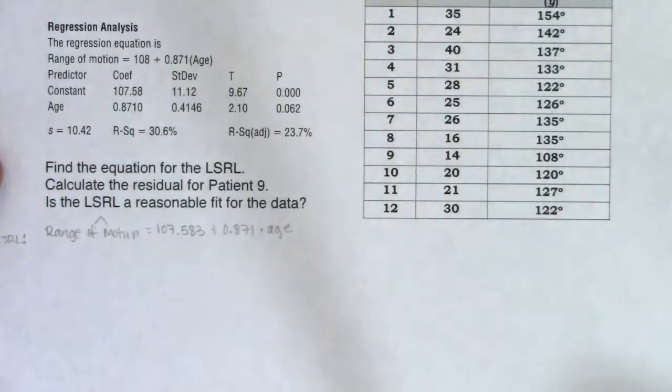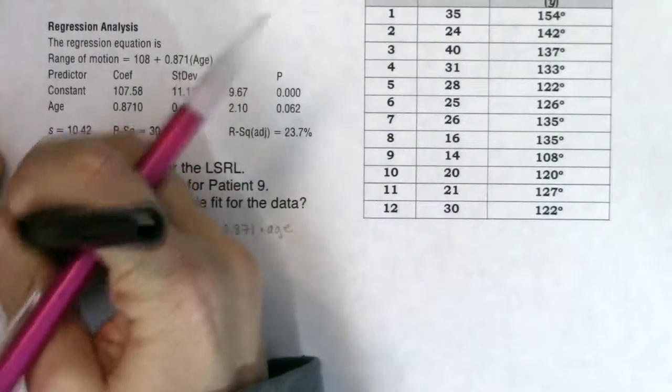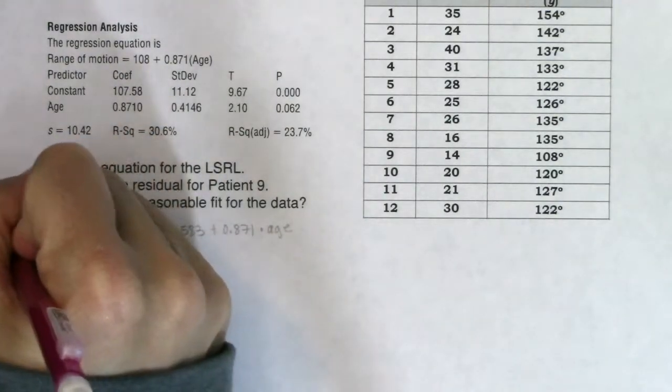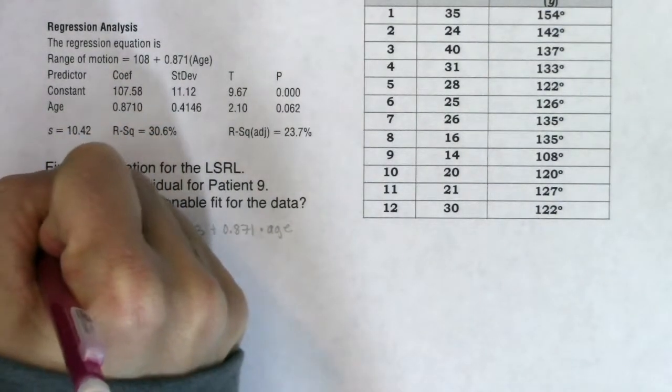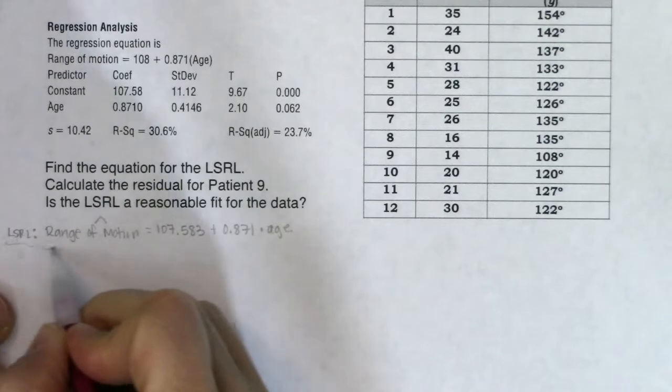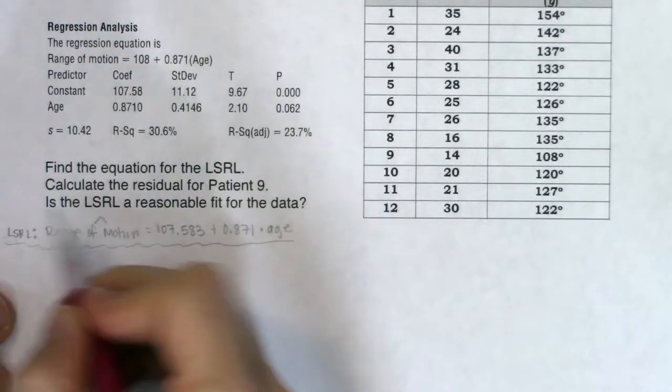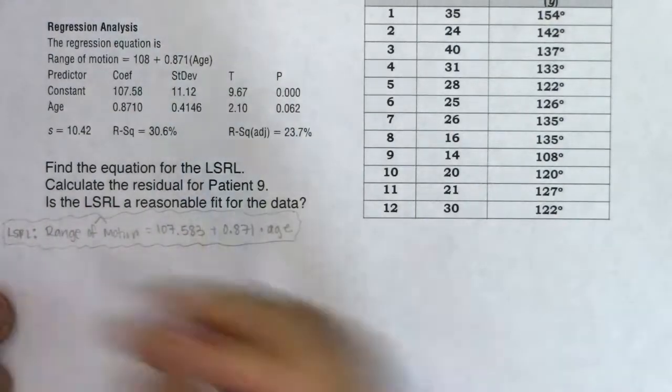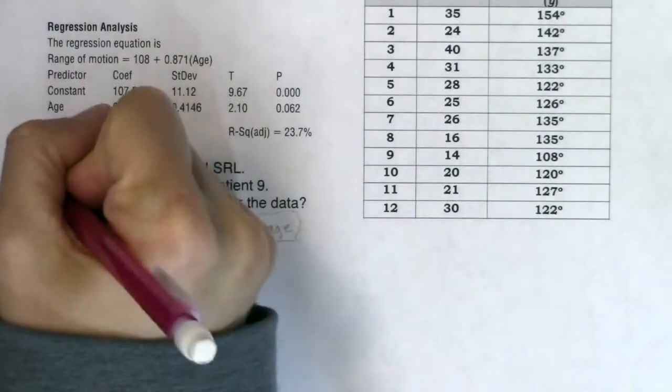So for my LSRL, I think I can predict your range of motion: 107.583 plus 0.871 times age. So that's what I think my LSRL is. There's the answer for the first part of that question.